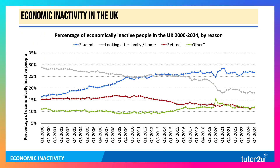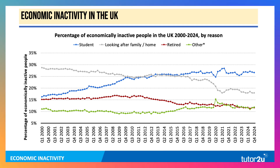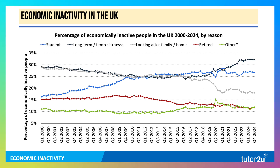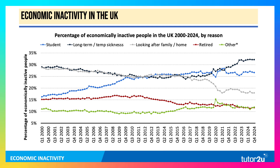This chart in the UK shows the percentage of economically inactive people over the last 25 years or so, and you can see the rise in the percentage who are students. But here's a really important idea: the percentage of inactive people who are long-term sick or have a temporary sickness has gone up — it's now the dominant single cause. A lot of that is linked to long COVID, in particular adults over the age of 50.